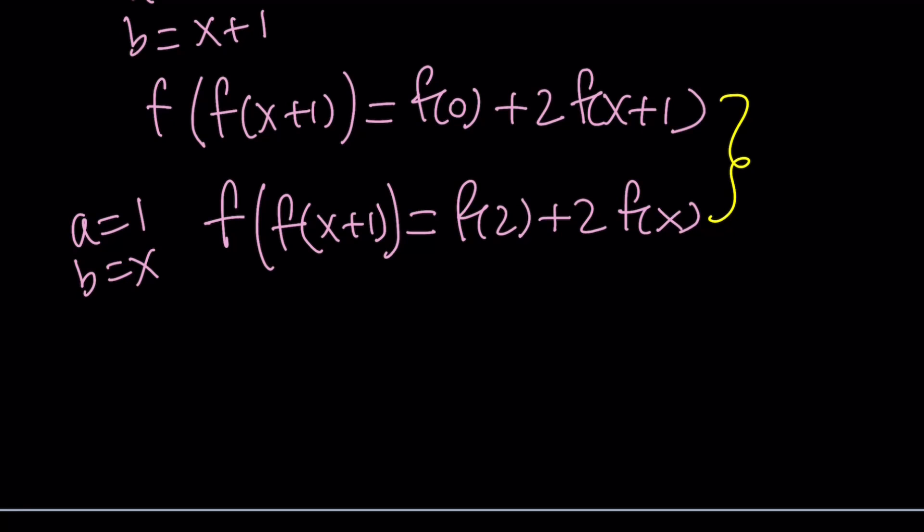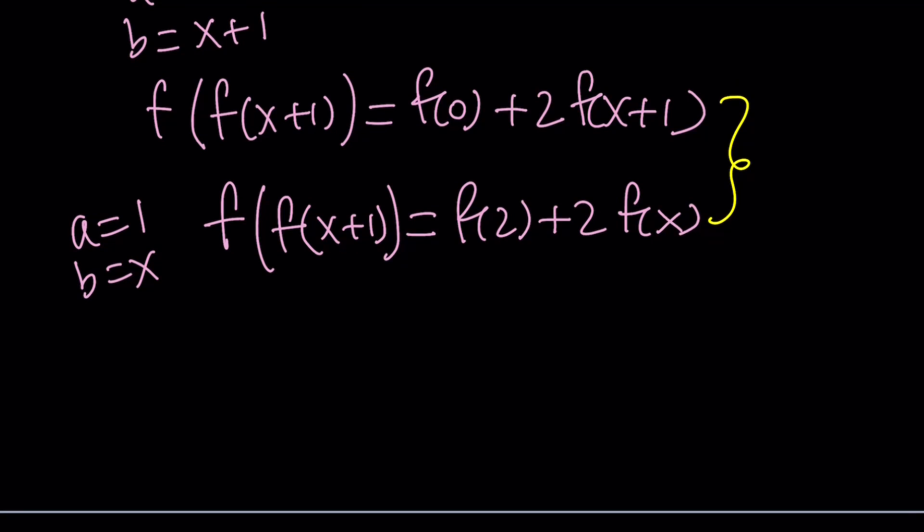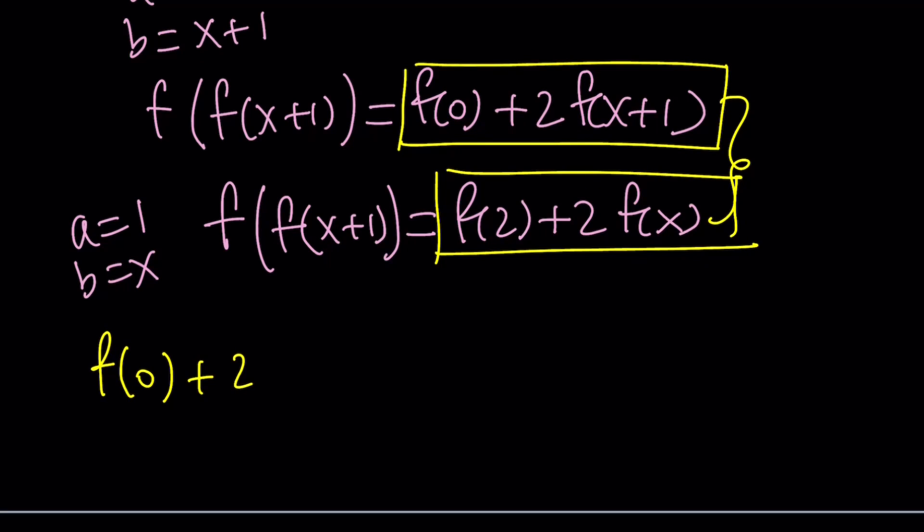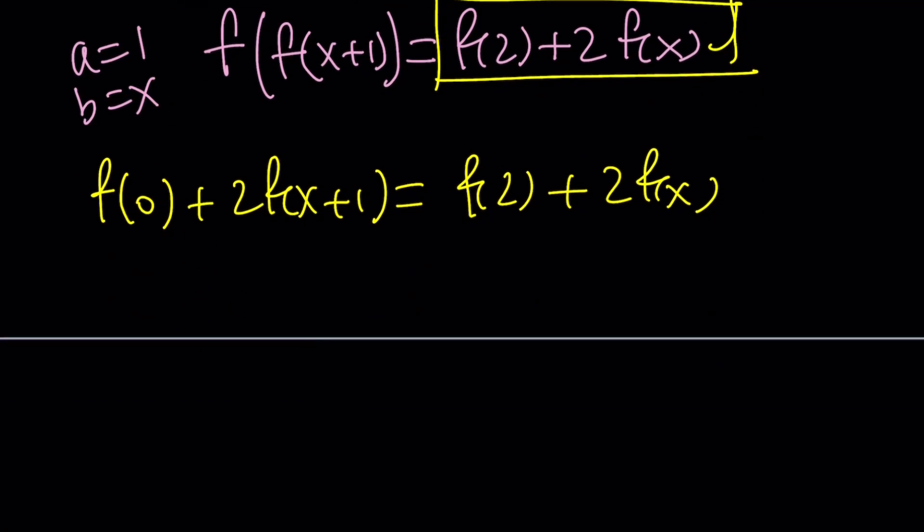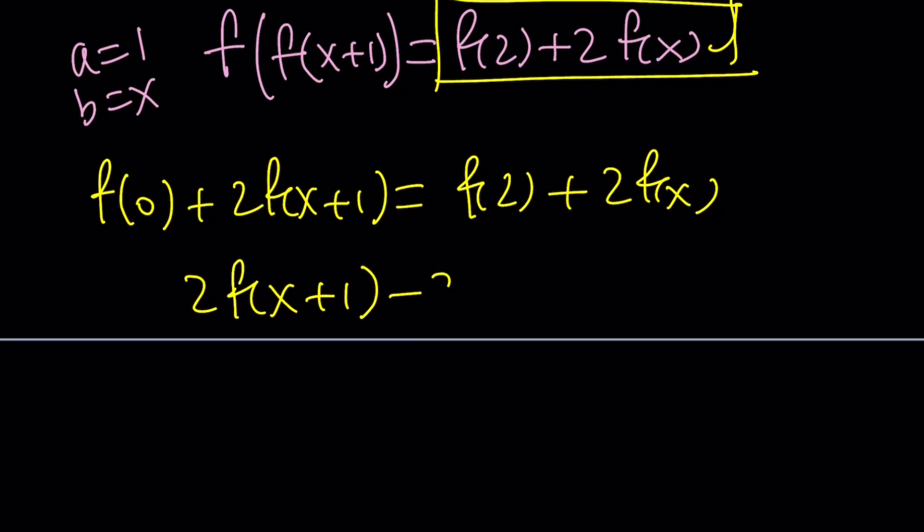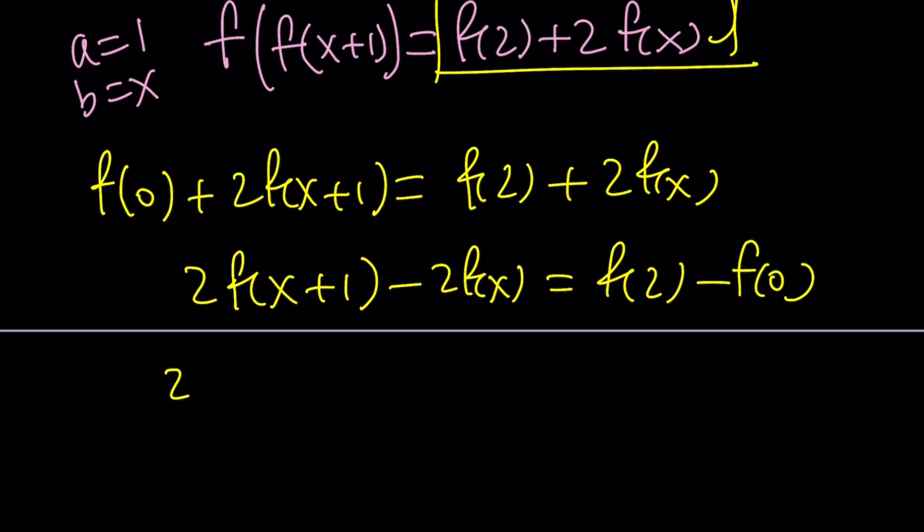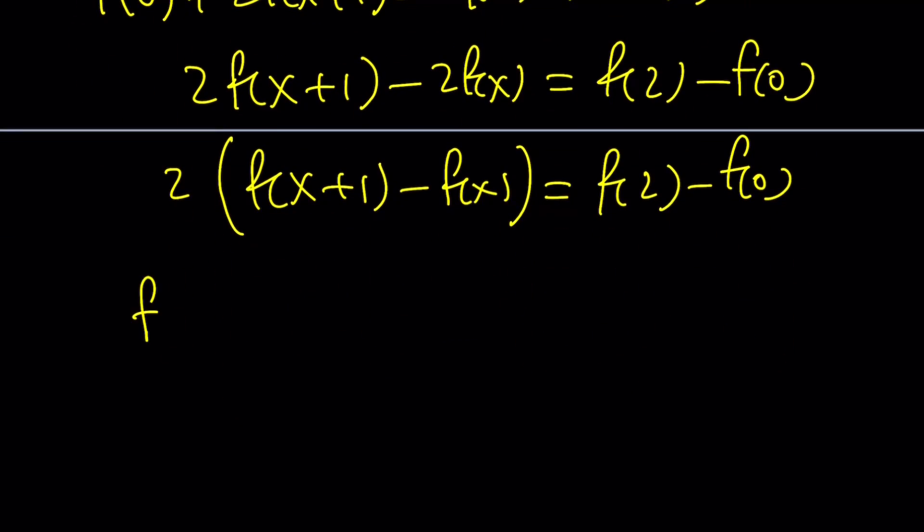And notice that we have the same expression on the left hand side. Therefore, we have the same thing on the right hand side as well. So we can set this equal to that, because if two things are equal to the same thing, then they're equal. So f of 0 plus 2 times f of x plus 1 equals f of 2 plus 2f of x. And this is actually very nice, because we're going to put the variables on the same side and the constants on the other side. Let's go ahead and subtract 2f of x and f of 0. And then we're going to factor out a 2. And you probably guessed the next step—we're going to divide by 2. So from here, we get f of x plus 1 minus f of x equals f of 2 minus f of 0 divided by 2.